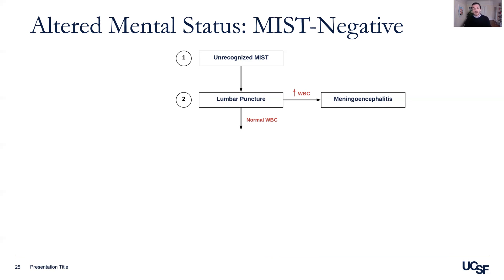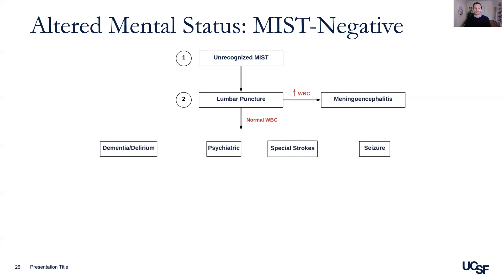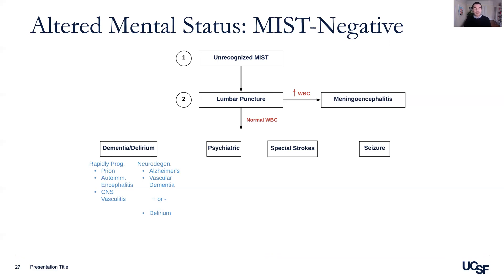A normal white blood cell count pushes us into one of four categories. We can think about dementia and delirium syndromes, like the rapidly progressive dementias, including prion disease, autoimmune encephalitis, or CNS vasculitis, as well as neurodegenerative diseases like Alzheimer's or vascular dementia — and these can come with or without delirium and still lead to altered mental status.